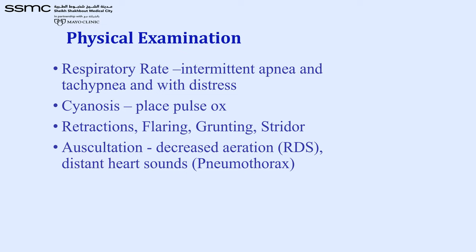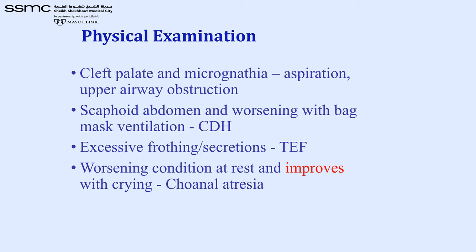On physical examination, we assess respiratory rate — whether tachypnea, bradypnea, or intermittent apnea — cyanosis, retractions, auscultation for decreased aeration, RDS, distant heart sounds, and pneumothorax. We also look for other signs such as cleft palate, micrognathia, scaphoid abdomen as in congenital diaphragmatic hernia when intestines move into the chest cavity, excessive frothing secretions as in tracheoesophageal fistula, and worsening at rest with improvement during crying — the hallmark of choanal atresia.